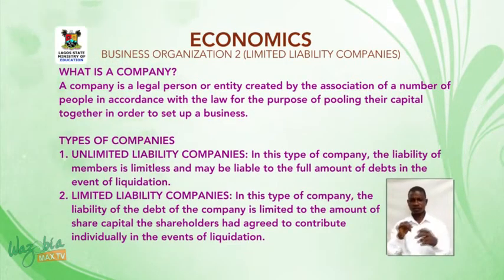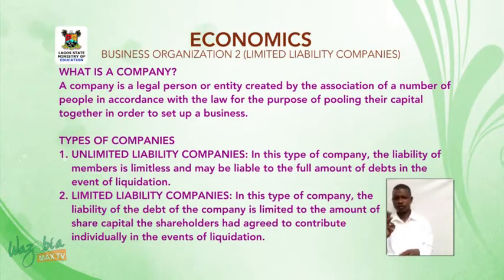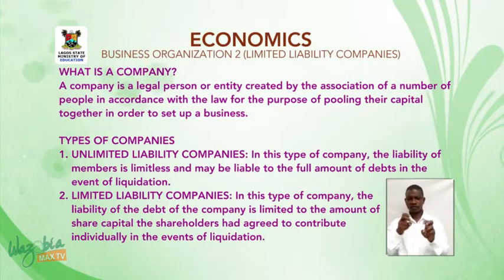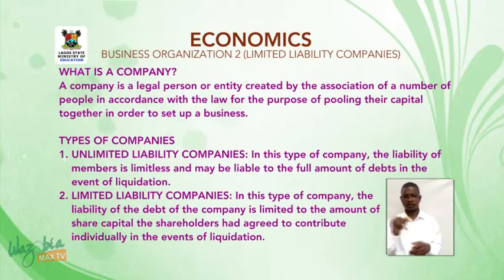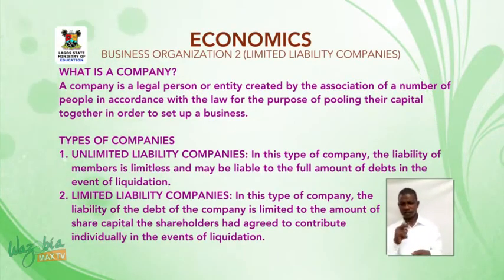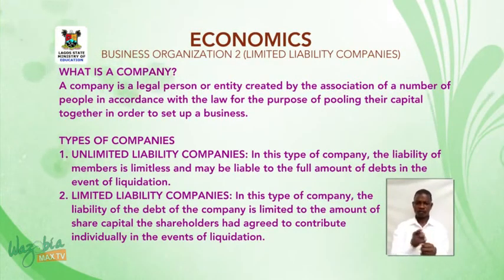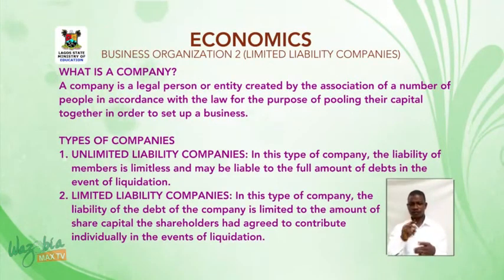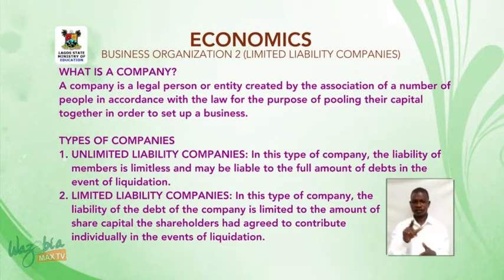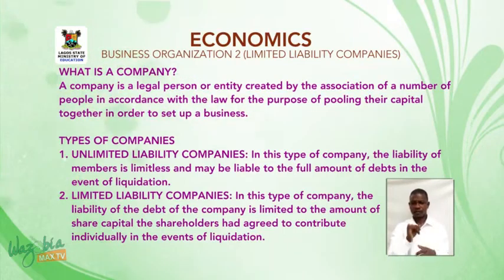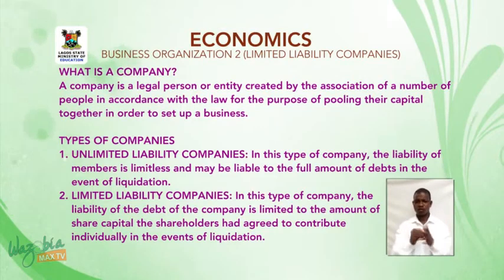Types of companies: 1. Unlimited liability companies — in this type of company, the liability of members is limitless and members may be liable to the full amount of debt in the event of liquidation. 2. Limited liability companies — in this type of company, the liability for the debt of the company is limited to the amount of capital the shareholders had agreed to contribute individually in the event of liquidation.